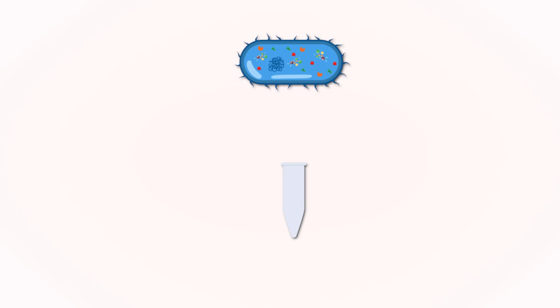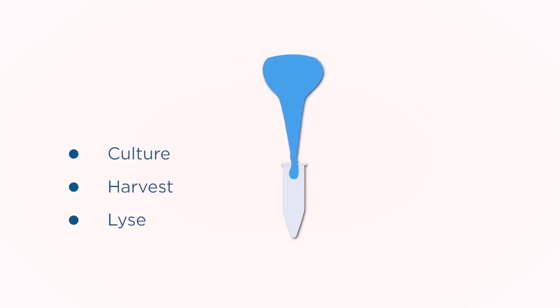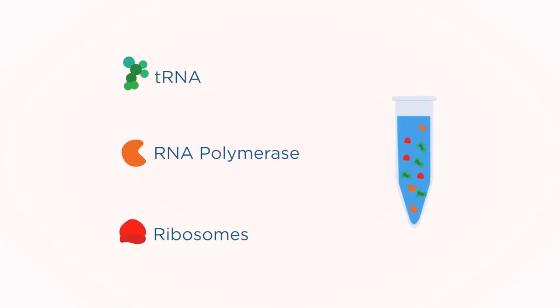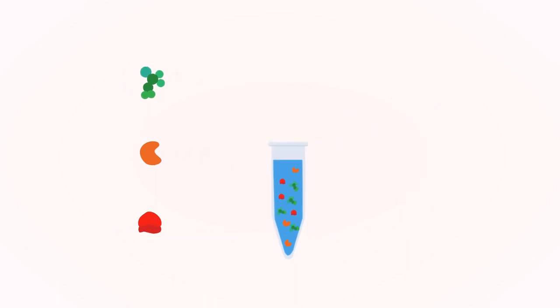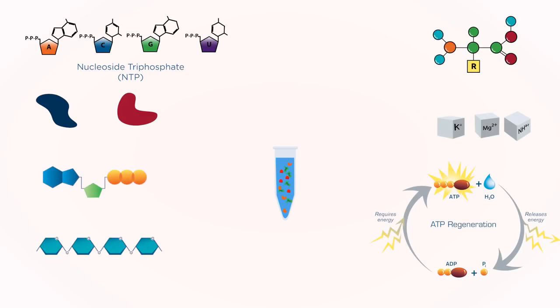To manufacture cell-free systems, laboratories culture, harvest, and lyse cells to create a crude extract containing the natural transcriptional and translational machinery of the selected organism. They then add other essential elements instrumental for protein synthesis, such as NTPs, amino acids, cofactors, and salts.